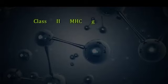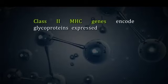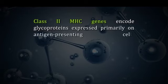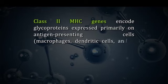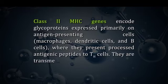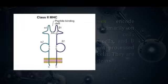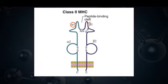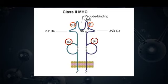A hydrophobic section anchors the molecule in the membrane and a short hydrophilic sequence carries the C-terminus into the cytoplasm. Class 2 MHC genes encode glycoproteins expressed primarily on antigen-presenting cells — macrophages, dendritic cells, and B cells — where they present processed antigenic peptides to TH cells. They are transmembrane glycoproteins consisting of alpha and beta polypeptide chains of molecular weight 34 kilodaltons and 29 kilodaltons respectively. Structural studies have shown that the alpha-2 and beta-2 domains, nearest to the cell membrane, assume the characteristic immunoglobulin fold, while the alpha-1 and beta-1 domains mimic the class 1 alpha-1 and alpha-2.